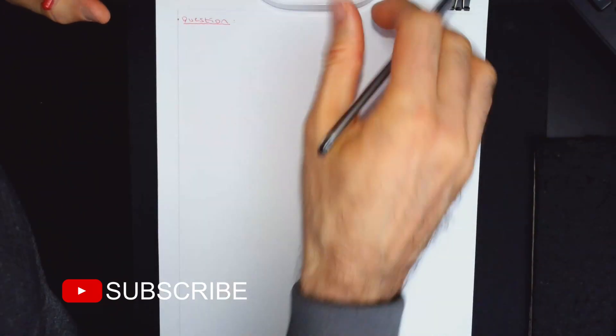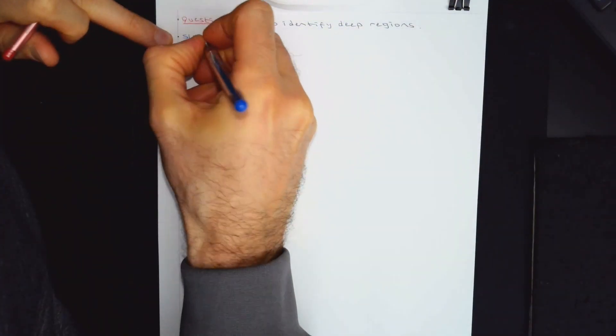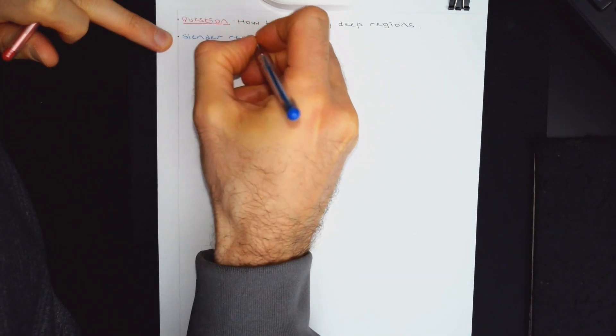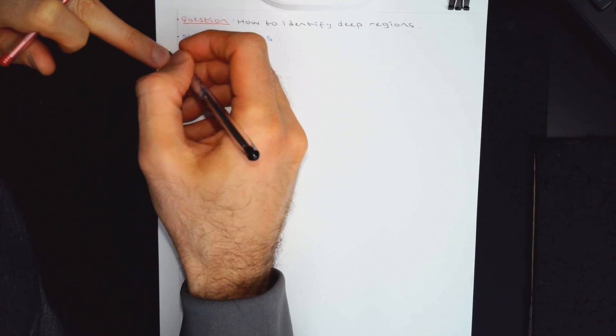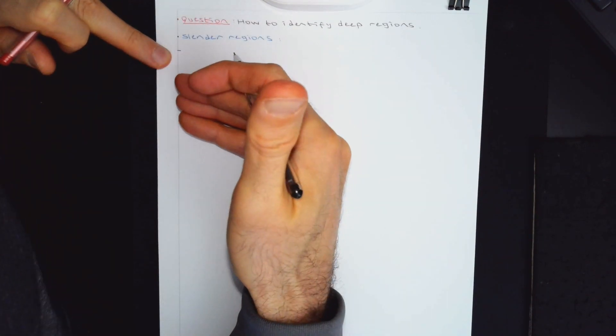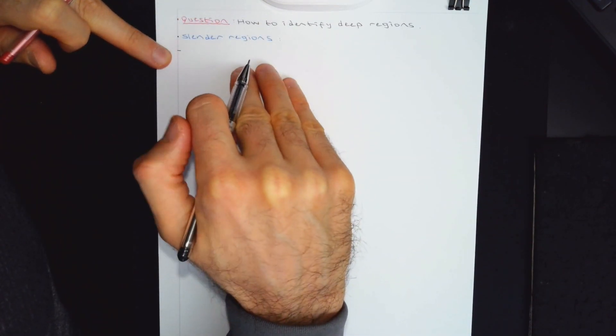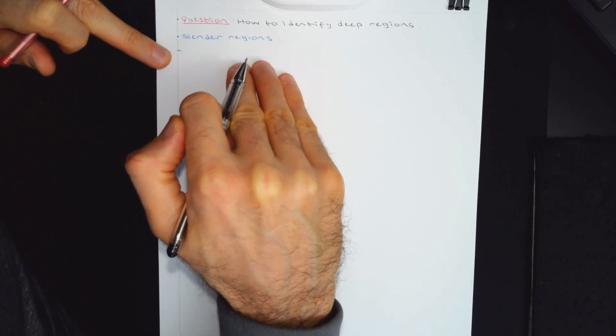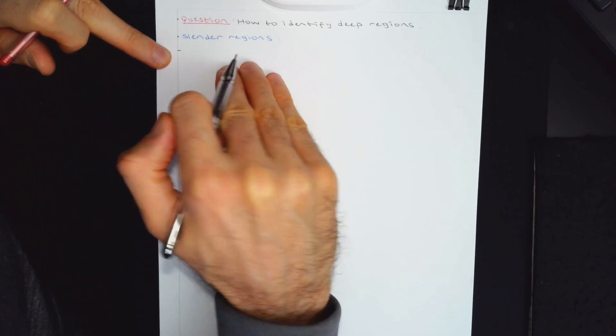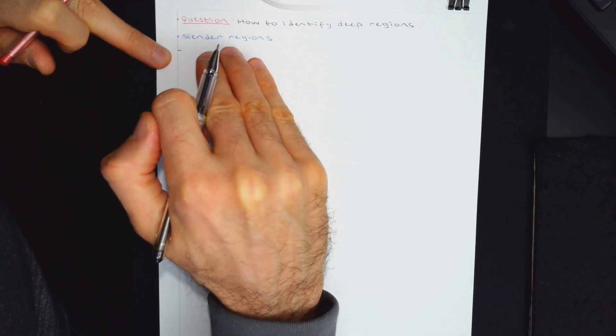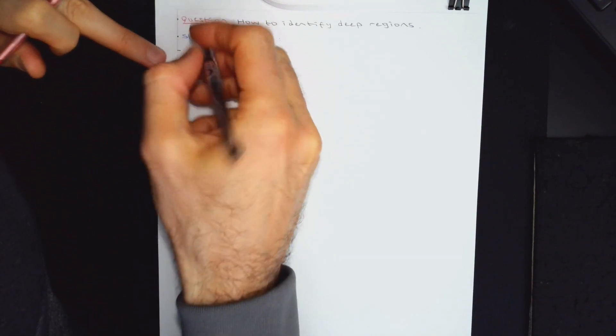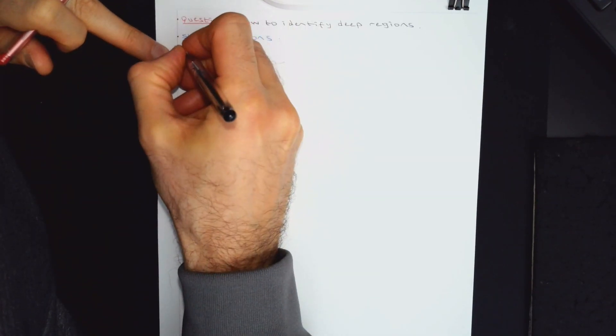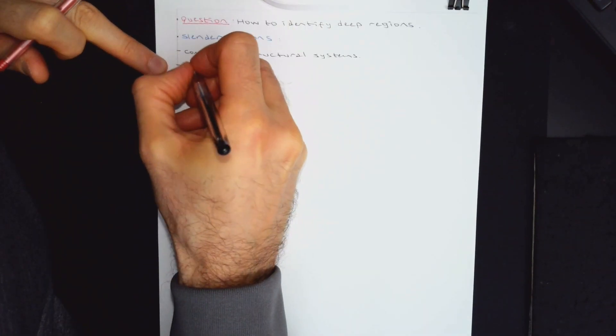Question is how to identify deep regions. Two types of regions. Slender regions, the type of region we can analyze. In undergraduate education, this is the only method that we teach. So if you know only one method, that is going to be this method, which is slender beam analysis. So slender regions, very common.